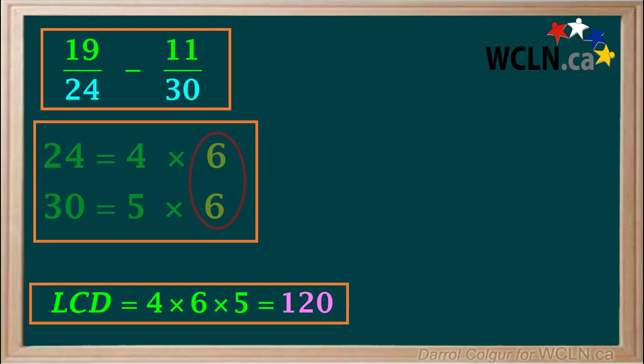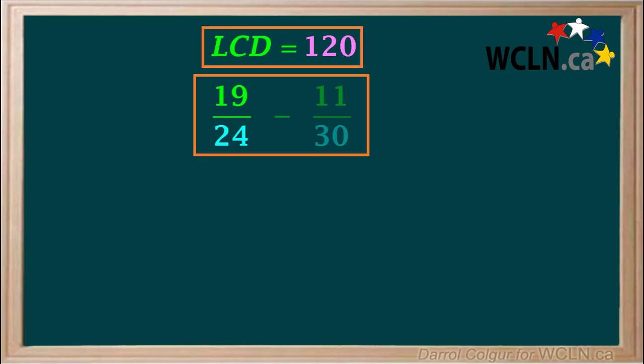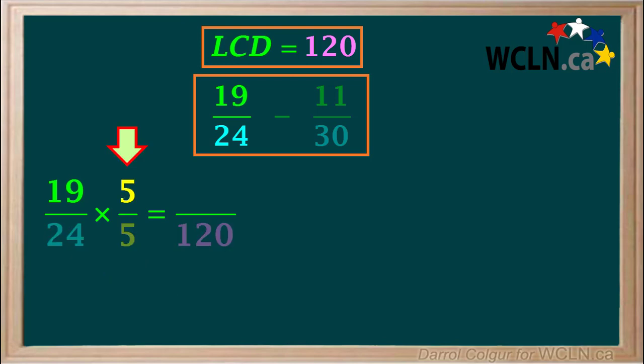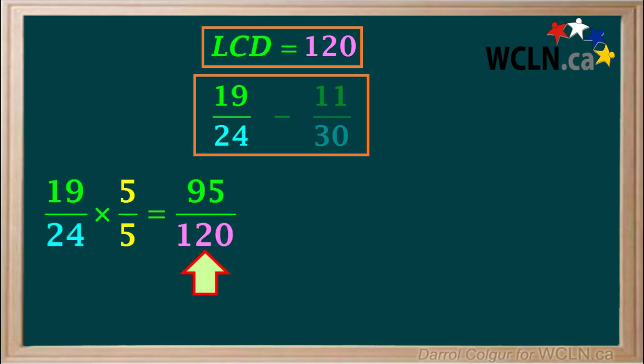We must rewrite both fractions so they have a denominator of 120. We'll start with the fraction 19 over 24. To give it a denominator of 120, we must multiply the 24 by 5. Therefore, to get the new numerator, we must also multiply the 19 by 5, which is 95. So 19 over 24 can be written as 95 over 120.